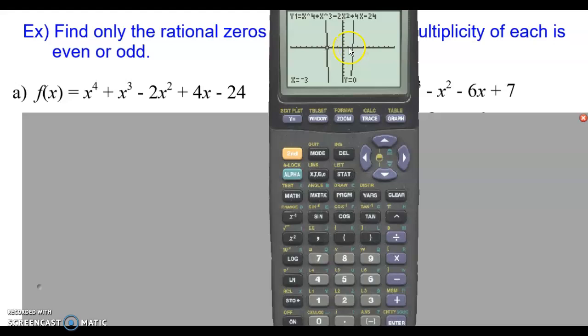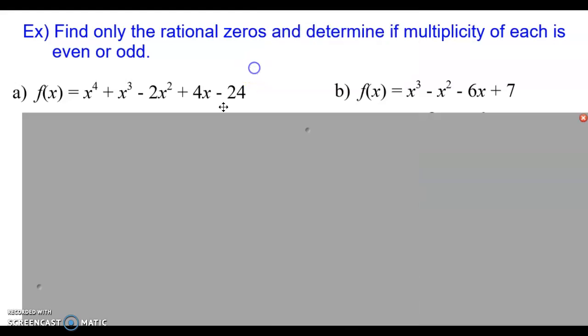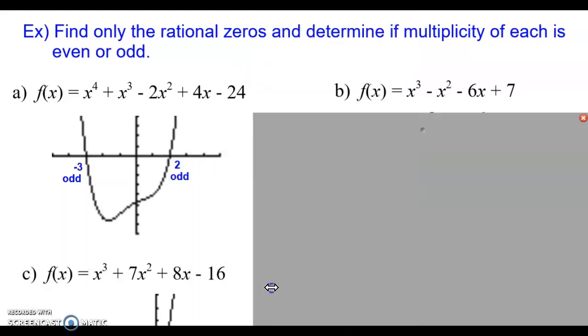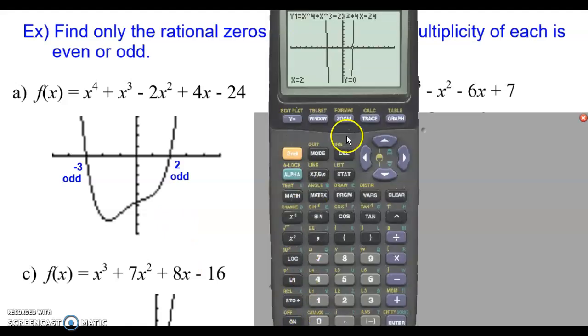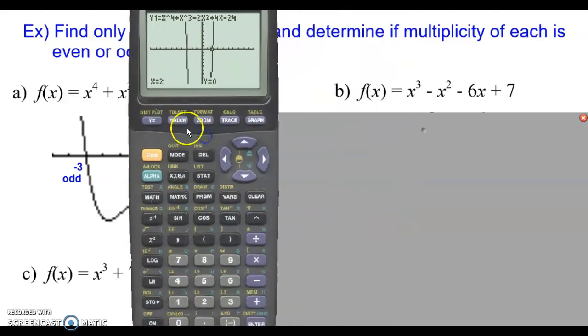Where else? Well, if this is one, then that would be two. So let's try trace two. And yes, that is also a zero. And it would also have odd multiplicity. So this first example, I put a little bit nicer picture here in the notes. Negative three and two are our zeros, and they both have odd multiplicity. Let's take a look at this other function.